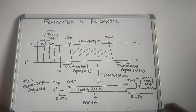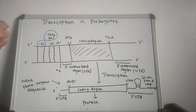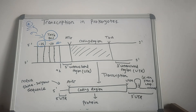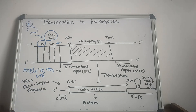After the binding of the sigma factor, the RNA polymerase recognizes the promoter region. The sigma factor which has initially bound is then released, and transcription proceeds. The RNA is synthesized from the 5' to 3' direction, which is antiparallel to the DNA template. The RNA polymerase utilizes ribonucleotide triphosphates such as ATP, GTP, CTP, and UTP for the formation of RNA.